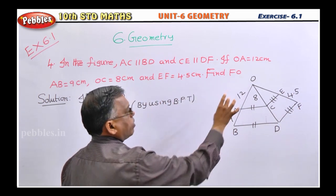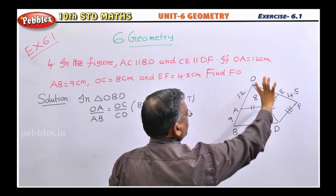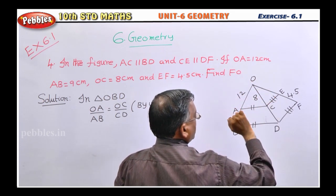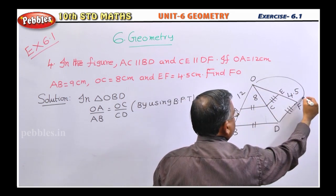Then, some of the values they are given. OA is given as 12, AB is 9, OC is 8, CD they did not mention. Then, EF also they are given. You need to find this OF, this entire length.